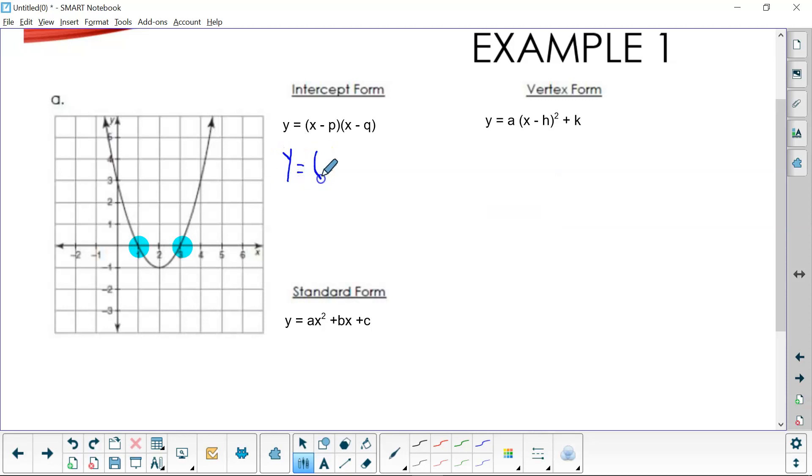Y equals, in parentheses, I'm going to have two values here, (x - __) and (x - __). My p value for my first point, the value of x is one, so one goes here. The q value, or the x value for my second point is three, so a three goes here.